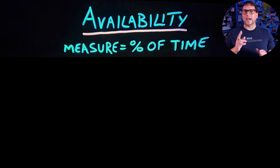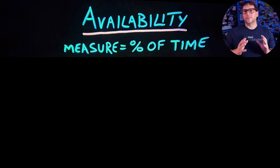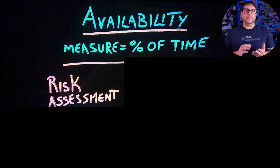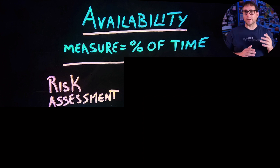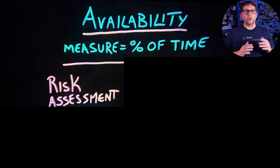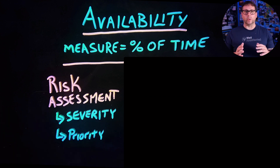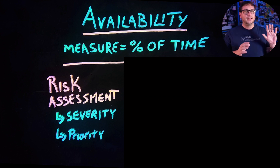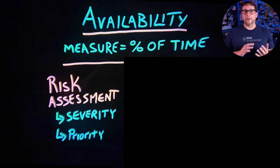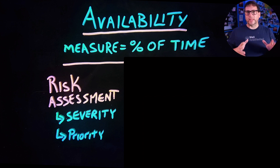There are two key topics that we need to think about when it comes to availability. The first one is risk assessment, which involves identifying the potential hazards that could affect the operation of your system, and then listing them out and categorizing them based on severity and priority. An important thing to keep in mind is these risks are not always going to be technical — they can be related to people and underlying processes too.